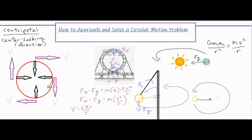To sum things up: be careful with the direction of your forces — something pointing directly towards the center of the circle is your positive centripetal force, and something pointing directly away is negative. If forces are at an angle, as in a banked curve or tether ball problem, use the component of the force that points towards the center. For orbit problems, use Newton's law of universal gravitation and set it equal to mv² over r to solve for whatever value you need.